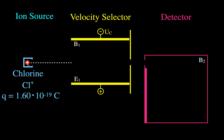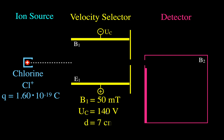In our velocity selector, we have a magnetic field and an electric field at right angles to each other. The magnetic field has a strength of 50 milliteslas. We're not given the electric field strength directly, but we're told that the voltage across the plates of that capacitor is 140 volts, and the distance between those plates is 7 centimeters. From this, we can calculate the velocity of the ions that pass directly through and into our detector.